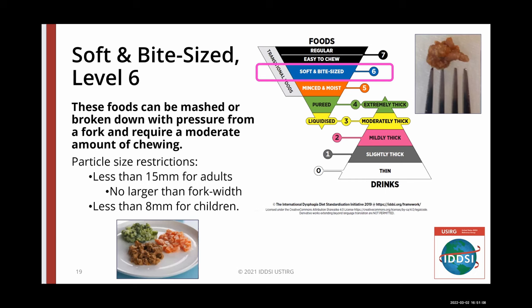Soft and bite-sized, level six, is tender and moist. These foods can be mashed or broken down with pressure from a fork and require a moderate amount of chewing. Pieces should be no larger than 15 millimeters — roughly a half inch — for adults and less than eight millimeters — roughly a fourth of an inch — for children. This size restriction was selected because a piece of food of that size would fall through the voice box and trachea and not block the upper airway. Soft and bite-sized can help minimize choking risks.